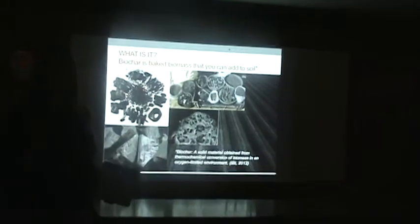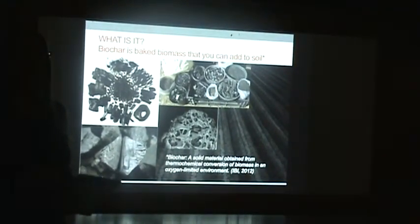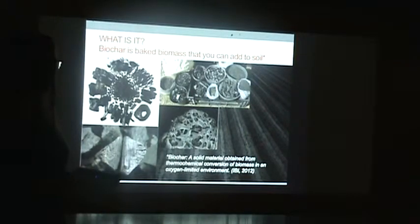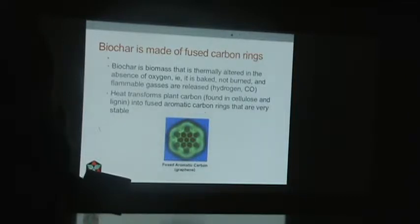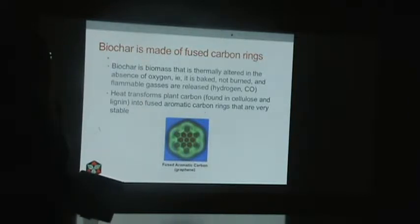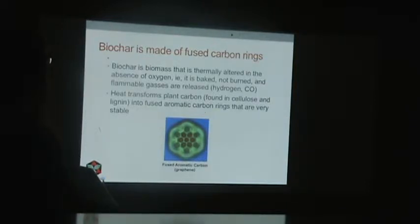What happens in that thermochemical conversion process — that baking process? Well, the carbon that's in the biomass — and biomass is mainly carbohydrates and hydrocarbons — when it's heated, will link up into what are called fused carbon rings, also called aromatic carbon. These are terms from organic chemistry that can be kind of confusing. But the essence of it is that you bake the biomass and gases are released that include mainly hydrogen and oxygen.